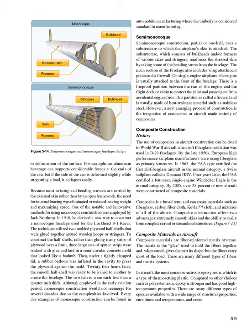One of the notable and innovative methods for using monocoque construction was employed by Jack Northrup. In 1918, he devised a new way to construct a monocoque fuselage used for the Lockheed S-1 racer. The technique utilized two molded plywood half shells that were glued together around wooden hoops or stringers. To construct the half shells, three large sets of spruce strips were soaked with glue and laid in a semi-circular concrete mold that looked like a bathtub.